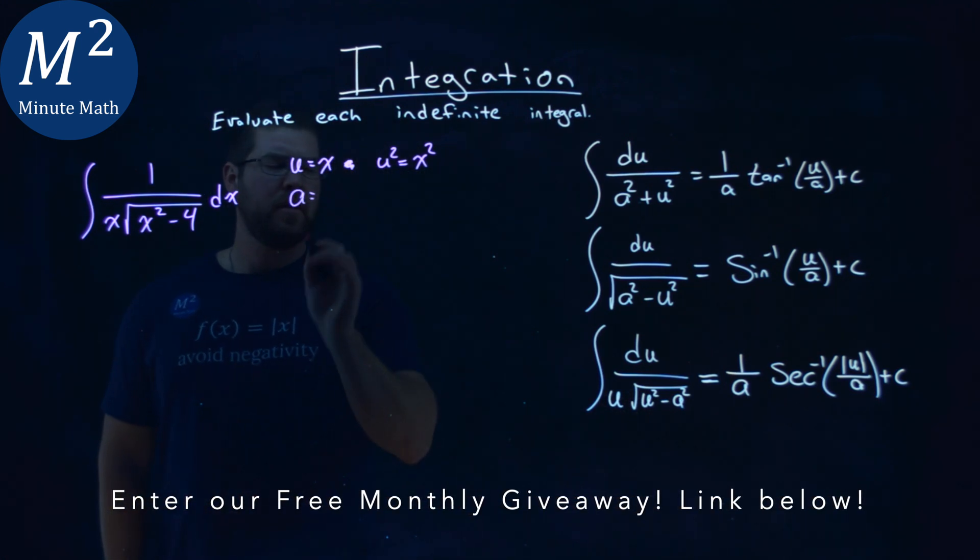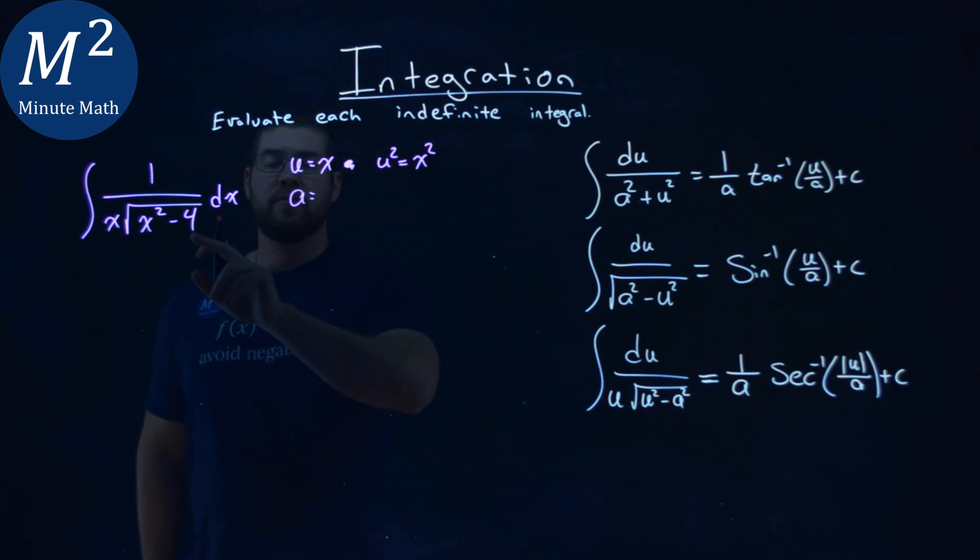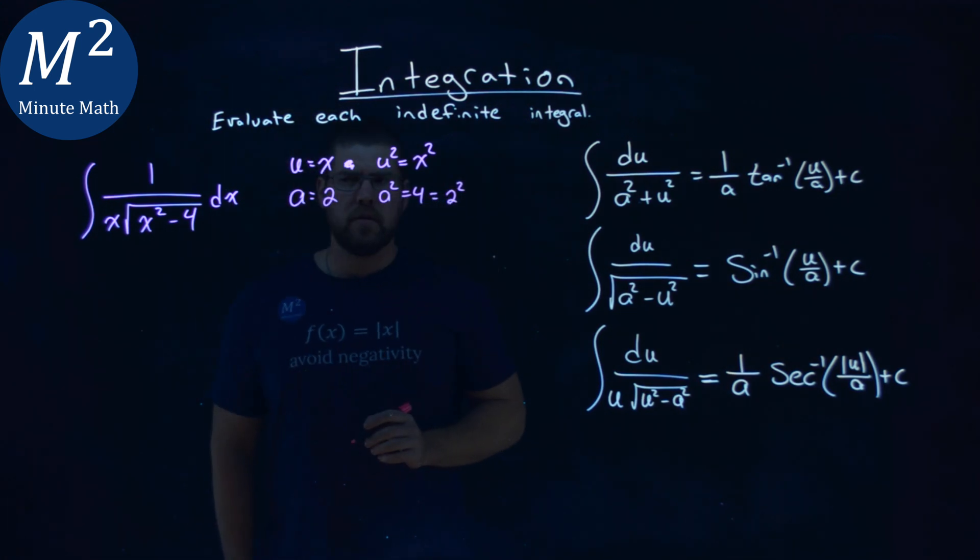What about a value? Well, a squared has to equal 4, so if a is 2, a squared is equal to 4, which is equal to 2 squared. Kind of easy to see there.